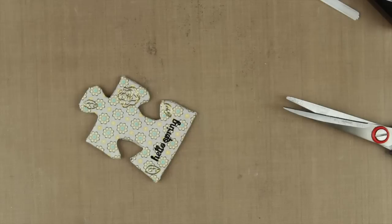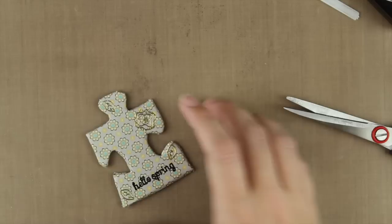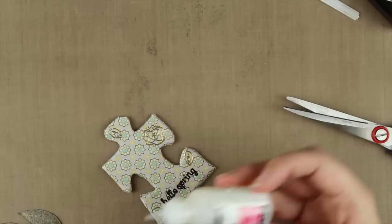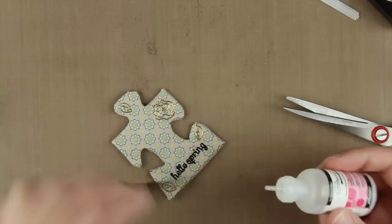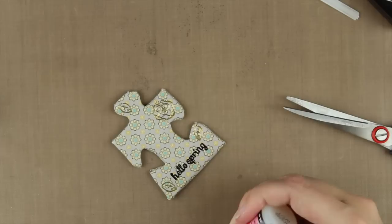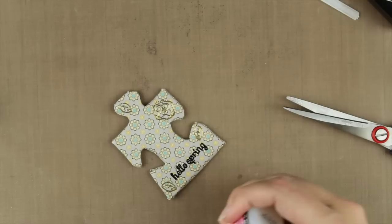Now we are just going to put the leaves on this and embellish it with some pearls. And we are actually done. I am going to use some glossy accents on the leaves because I want it to stick quite well. Deciding how much I need to put and where to put.